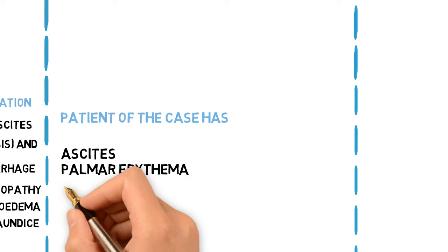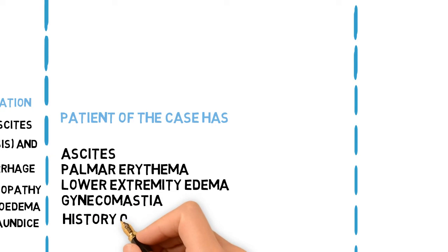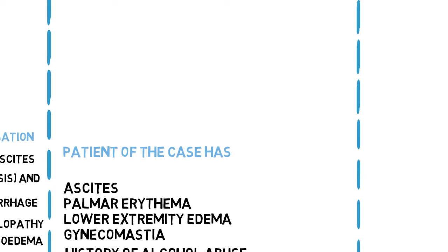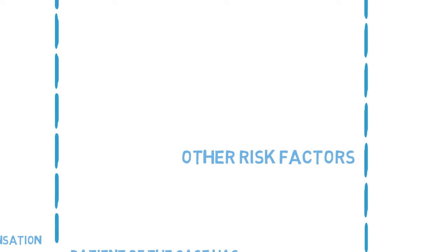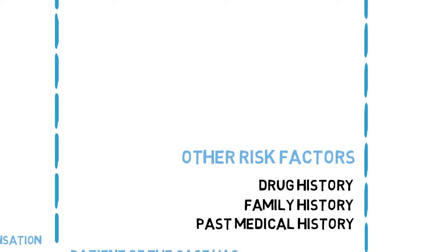Our patient has ascites, palmar erythema, lower extremity edema, and gynecomastia, which can suggest a diagnosis of liver failure, and he has a history of alcohol abuse. Other risk factors include drug history — it is important to elicit the use of over-the-counter medications, vitamins, and herbal and dietary supplements, which may account for liver injury. Family history of chronic hepatitis B should be noted. Past medical history of any metabolic syndromes, diabetes, dyslipidemia, obesity, hypertension, or autoimmune disorders should be sought.